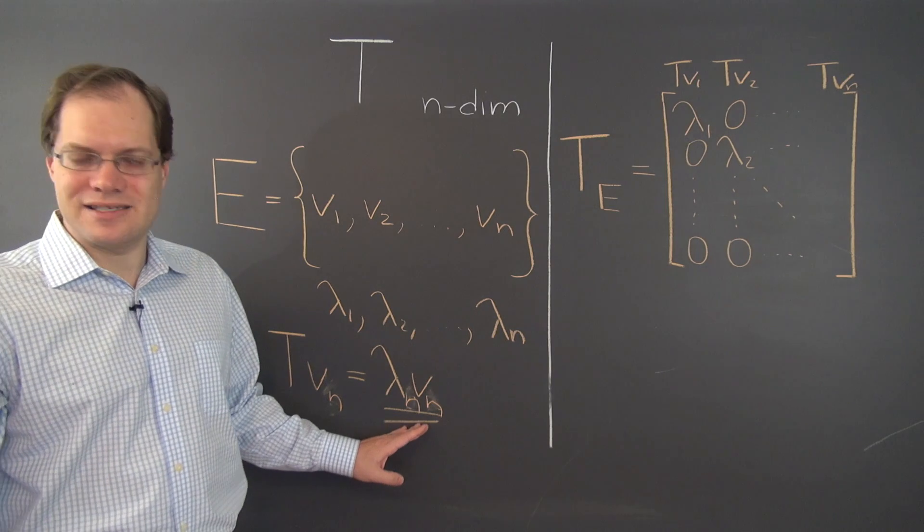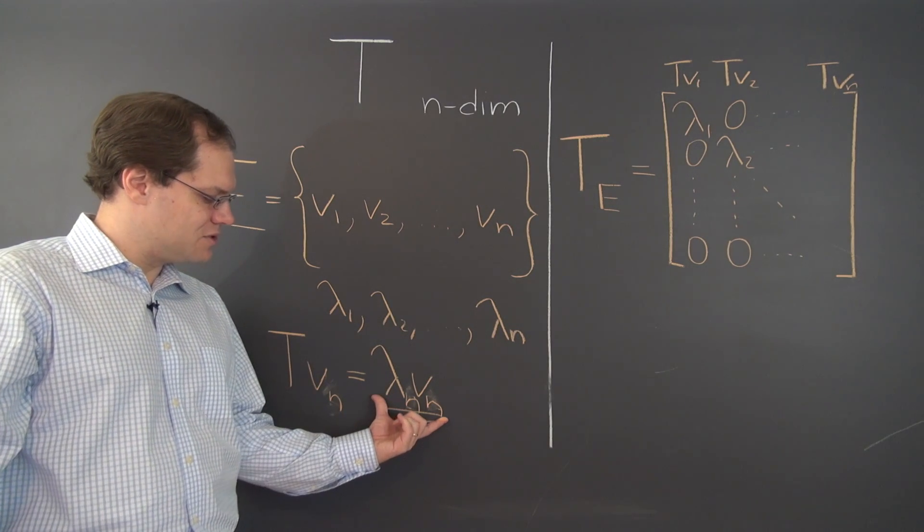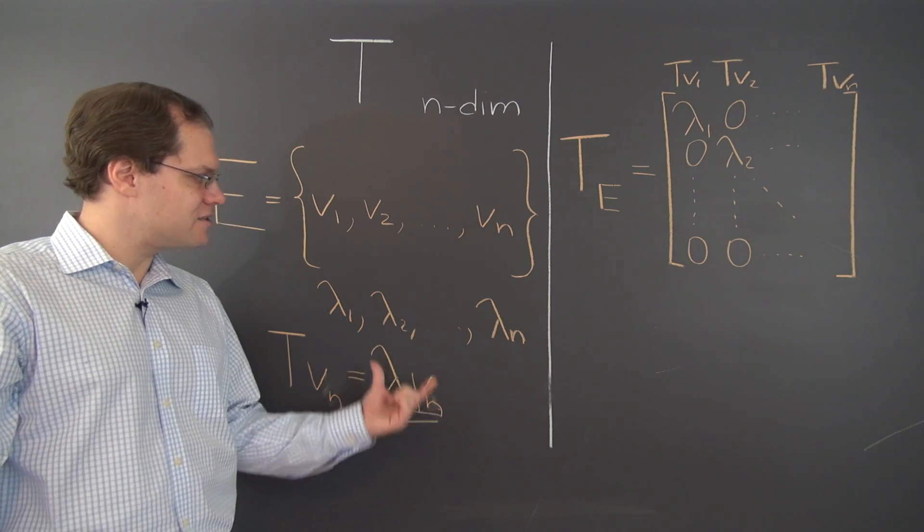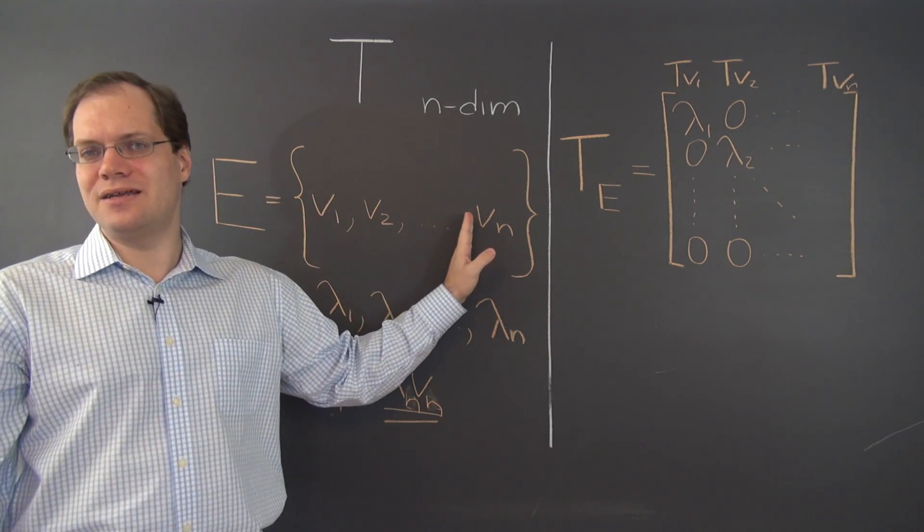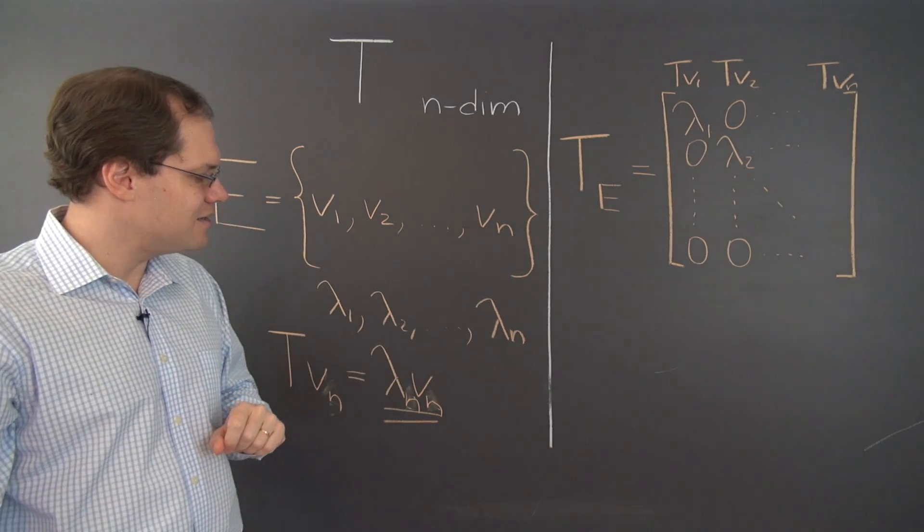And here's what we're going to get in the last column. Well, you see what we're going to get. We have to decompose this vector with respect to this basis. And, of course, it's none of any of the first n-1 vectors and lambda n of the last one.